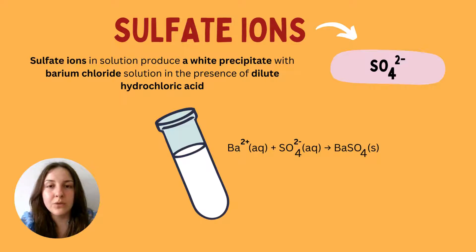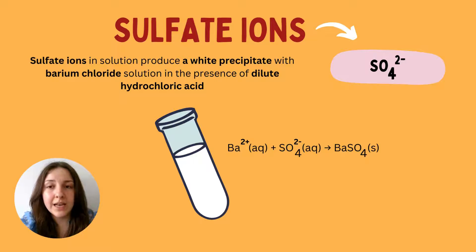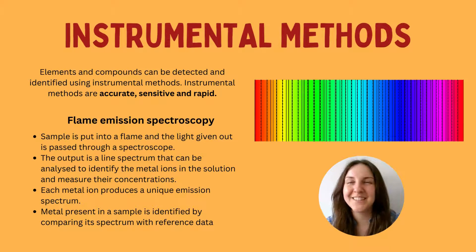To test for sulfate ions, you add barium chloride solution in the presence of hydrochloric acid to the solution containing sulfate ions. This forms a white precipitate. Barium has a two-plus charge as a metal, and it reacts with the sulfate ions — their charges cancel out as they form the compound barium sulfate.